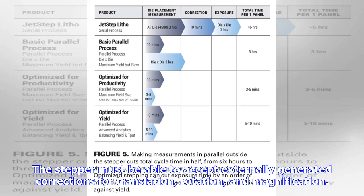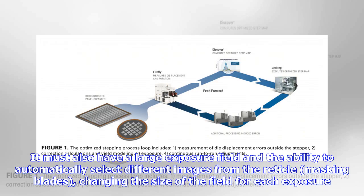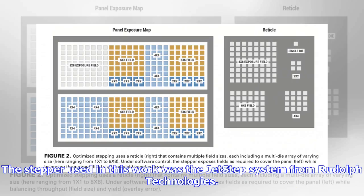The stepper must be able to accept externally generated corrections for translation, rotation, and magnification. It must also have a large exposure field and the ability to automatically select different images from the reticle, masking blades, changing the size of the field for each exposure. The stepper used in this work was the JetStep system from Rudolph Technologies.